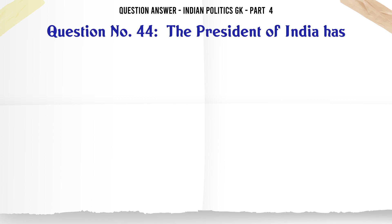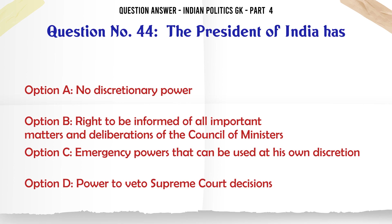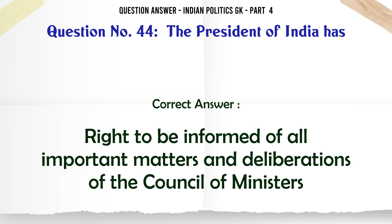The President of India has: A. No discretionary power. B. Right to be informed of all important matters and deliberations of the Council of Ministers. C. Emergency powers that can be used at his own discretion. D. Power to veto Supreme Court decisions. The correct answer is: right to be informed of all important matters and deliberations of the Council of Ministers.